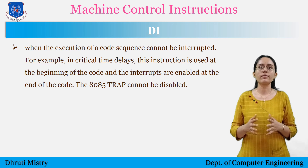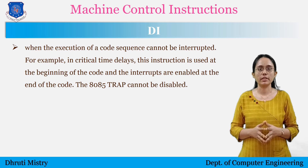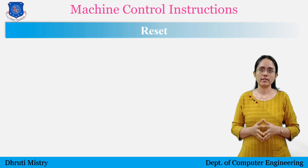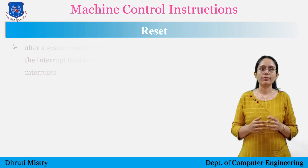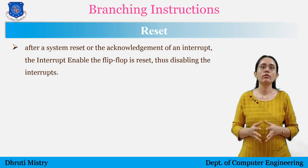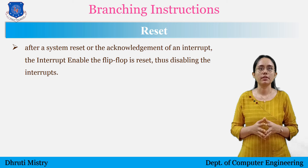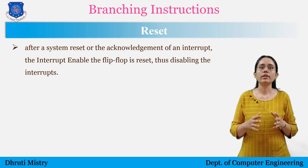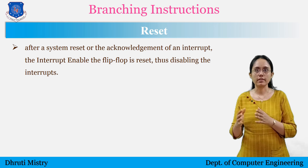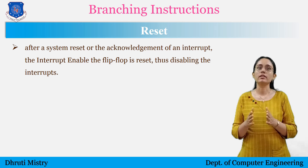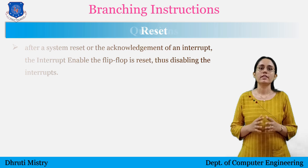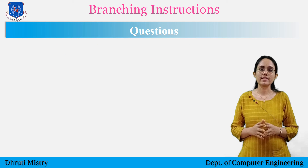The 8085 TRAP interrupt cannot be disabled. And the last one is reset. After a system is reset or acknowledgement of an interrupt, the interrupt enable flip-flop is reset, thus disabling the interrupts. That's all for today's session.